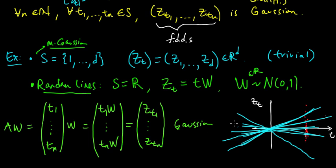Therefore this is multivariate Gaussian, and that holds for any t1 through tn, so this is indeed a Gaussian process. Those were just some super simple examples, and soon we're going to take a look at some much more interesting examples of Gaussian processes.